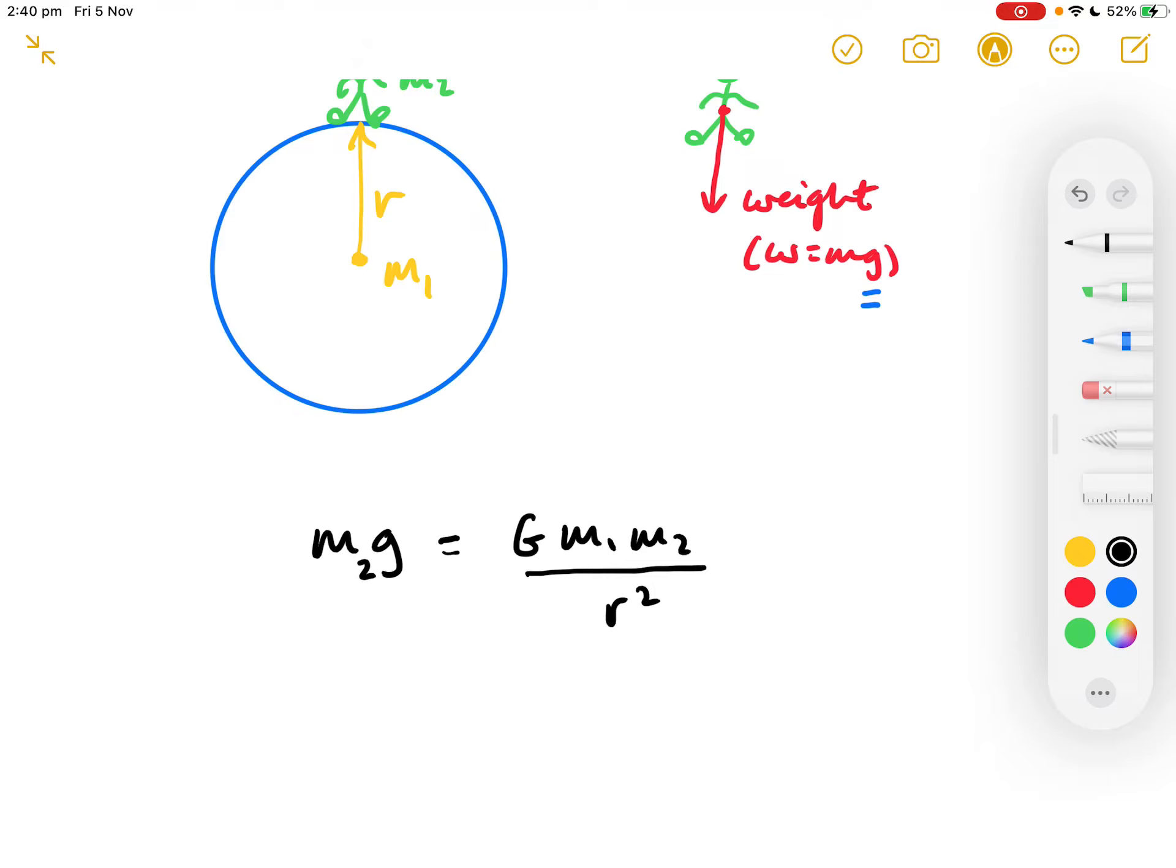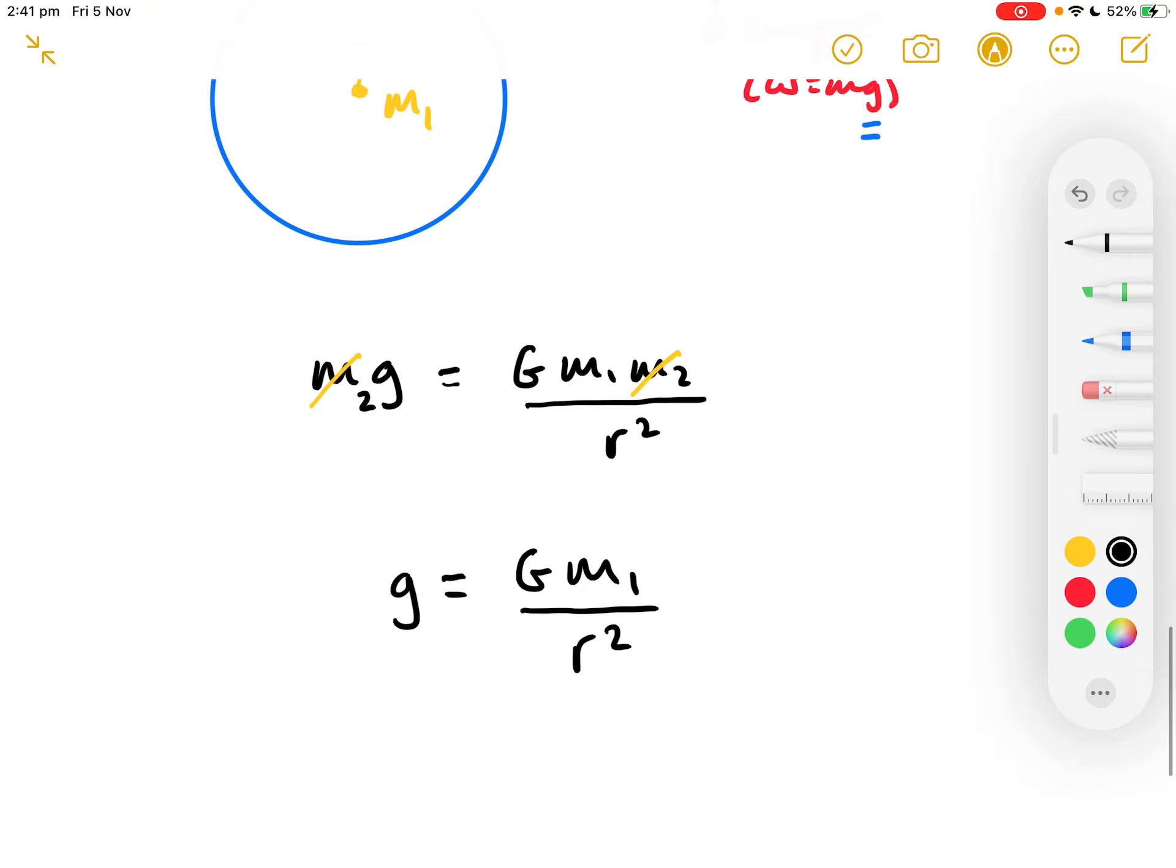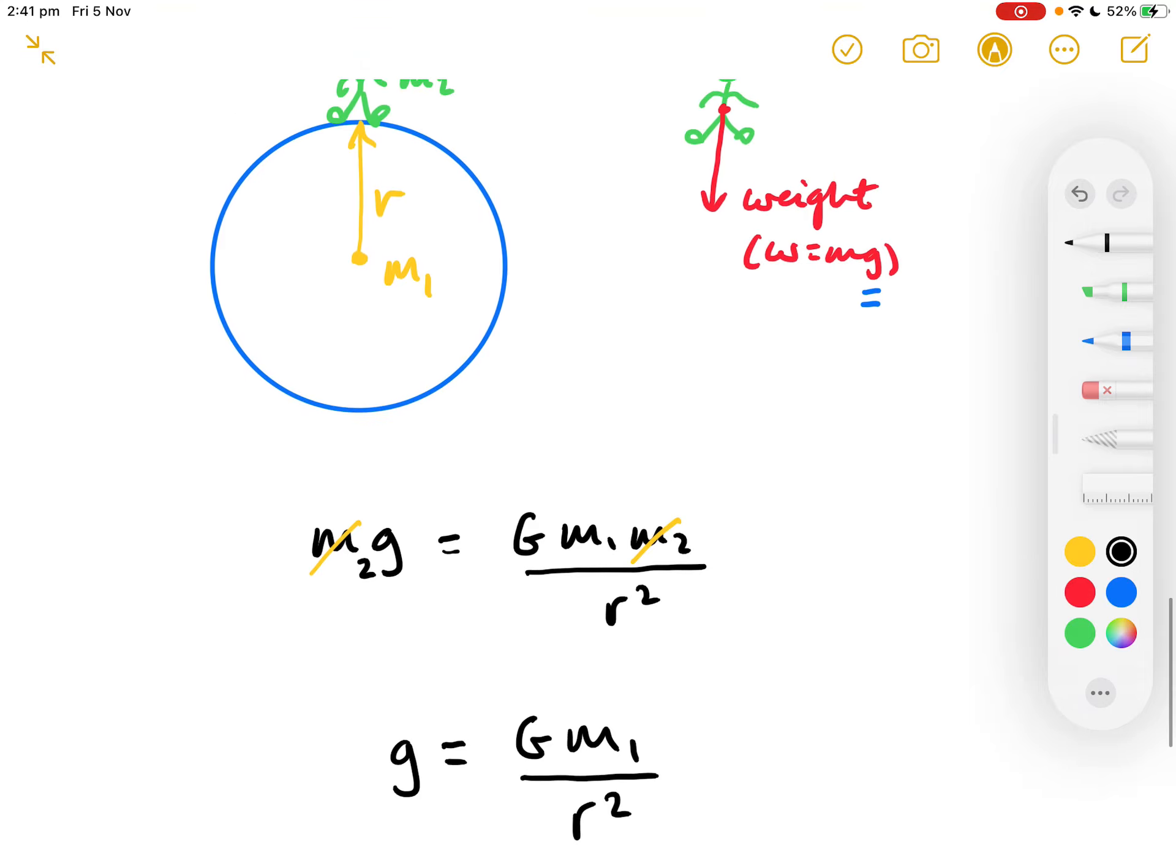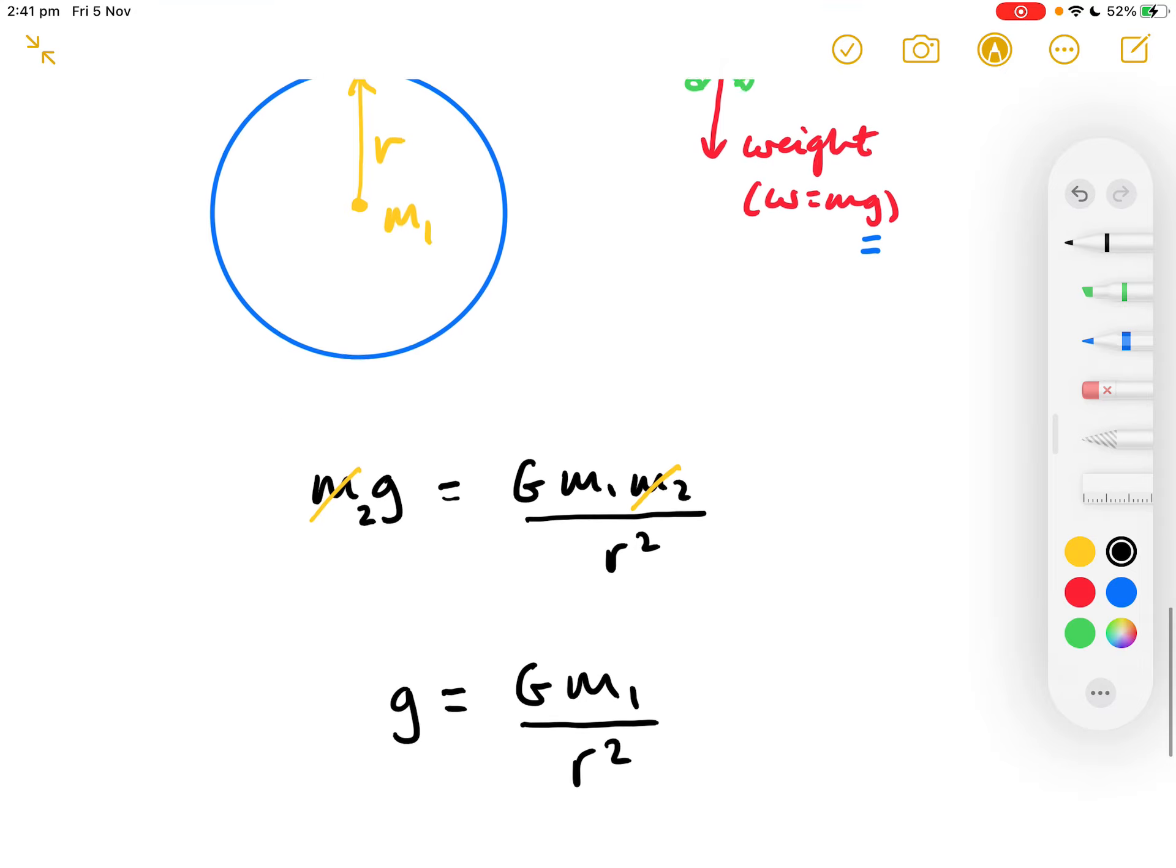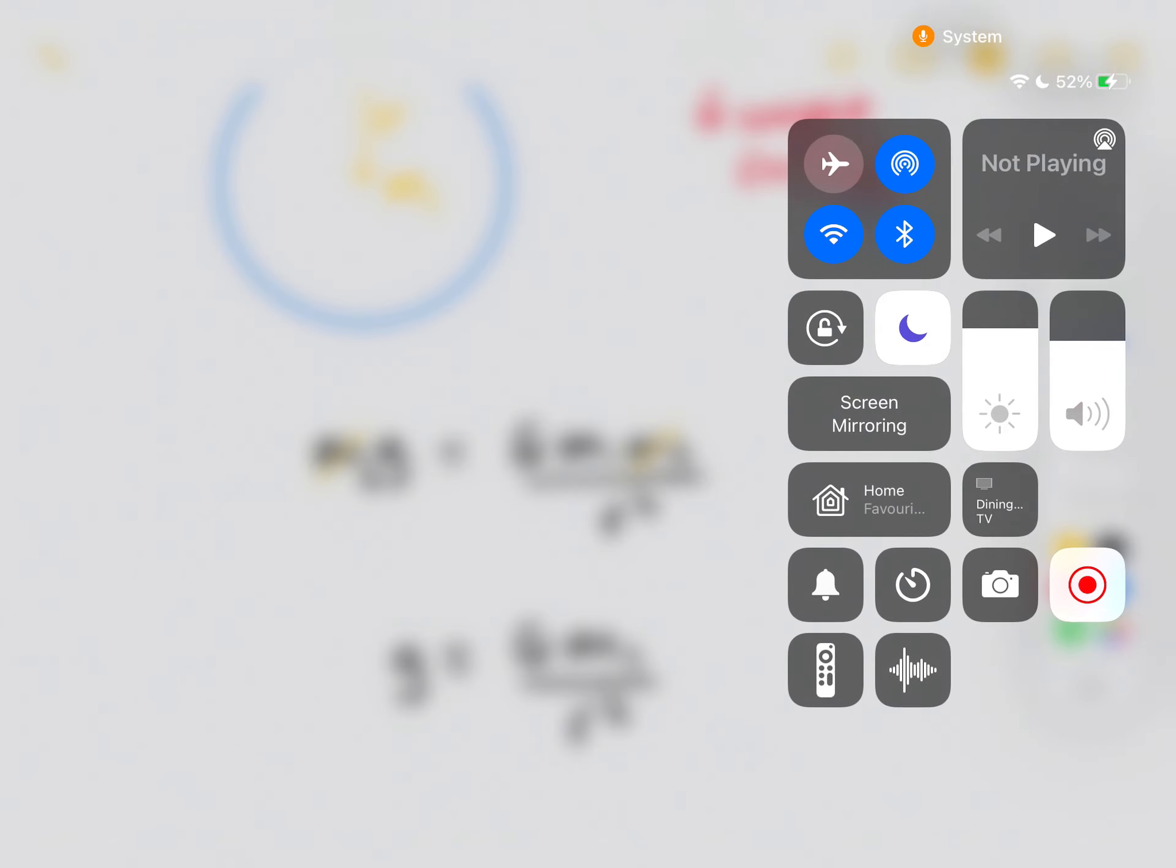Now, if you look at that equation, I think you can see that the M2s are going to cancel. And you're left, then, with an expression for the gravitational field strength of any planet. It is simply G M1, the mass of the planet, over R squared. You don't need to memorise that equation. But you should be able to set up the equation and essentially derive it just by doing what I have just done.